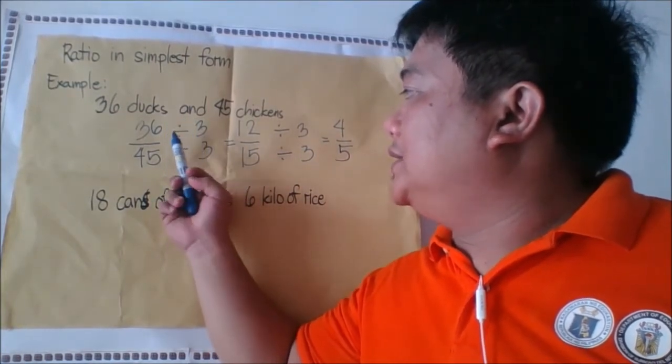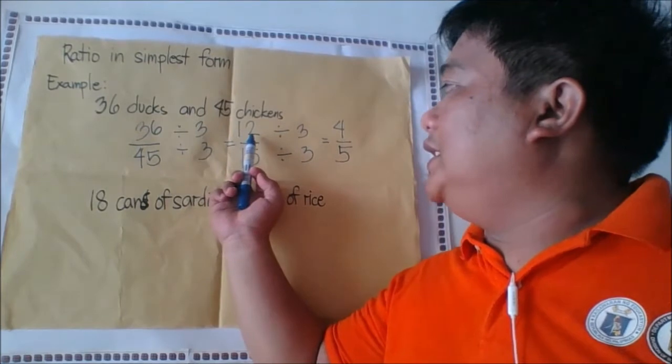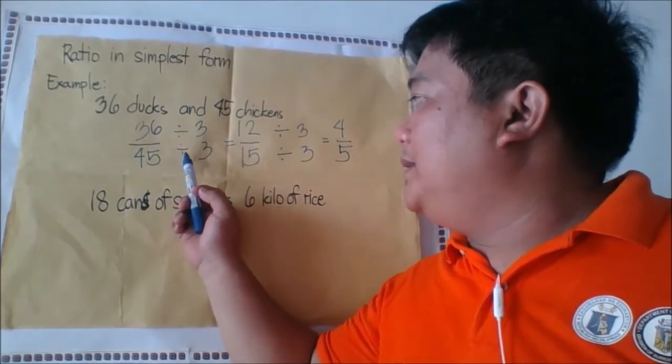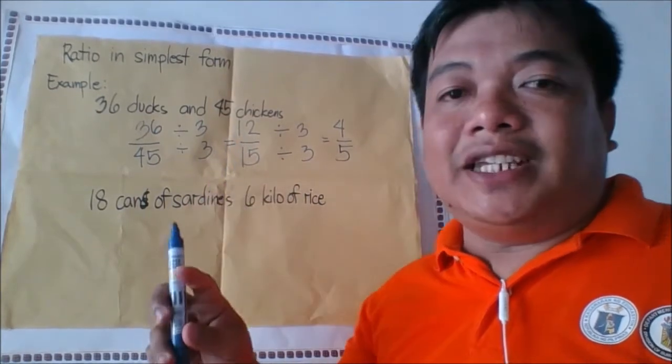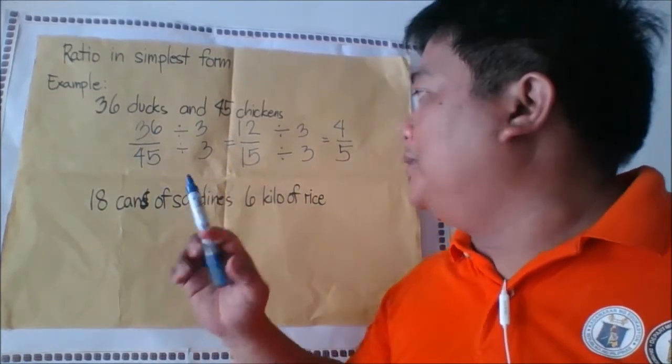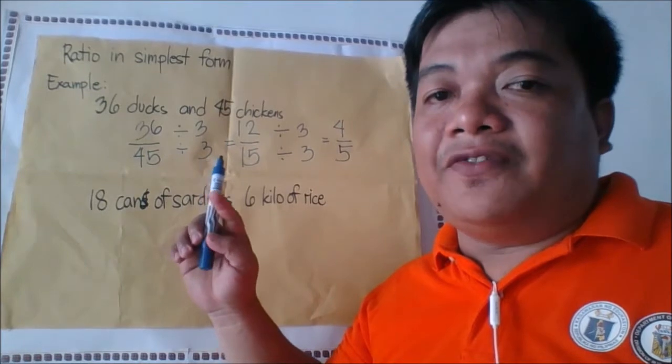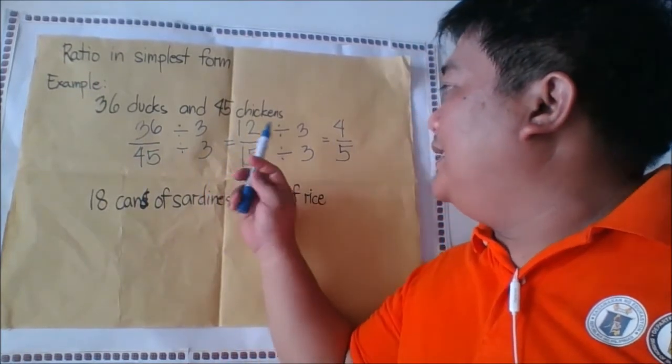So 36 divided by 3 is 12, and 45 divided by 3 is 15. Now since 12 to 15 is not yet in simplest form, there are other factors that can divide these two terms.